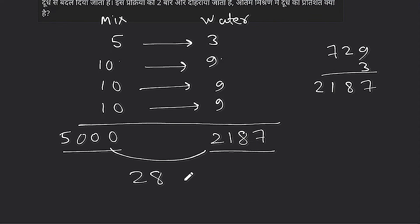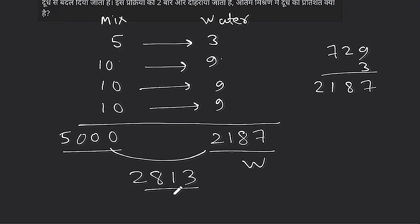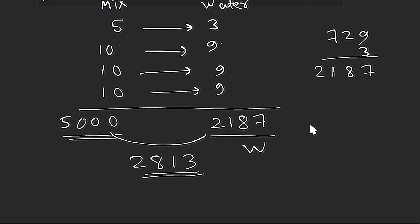The result is 2,813. So 5,000 minus 2,187 equals 2,813. This 2,187 is the water, and 2,813 is the milk. So 2,813 out of 5,000 is the percentage of milk. That is the answer to the question.